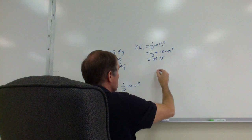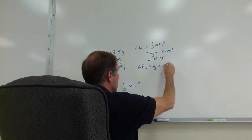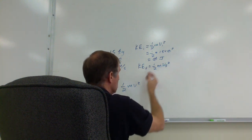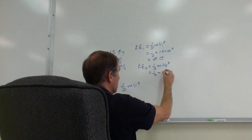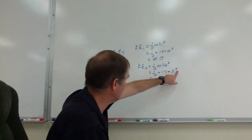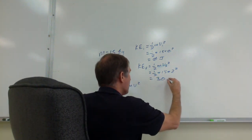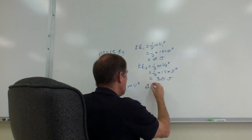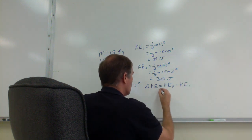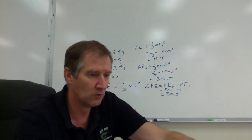The final kinetic energy is one-half times mass times final velocity squared — that's one-half times 15 times 2 squared. Two squared is 4, divided by 2 is 2, times 15 is 30 joules. So the change in kinetic energy is KE_final minus KE_initial, which is 30 minus zero, which is 30 joules.